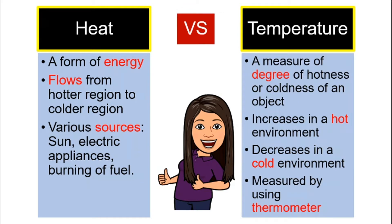How about temperature? What is temperature? Temperature actually is a measure of the degree of hotness or coldness of an object. That means it is something that we use to measure how hot or how cold an object is. Of course, it will increase in a hot environment and decrease in a cold environment. We measure temperature by using a thermometer. For example, during a check-up, we often get our body temperature measured. We use a thermometer. That is temperature.